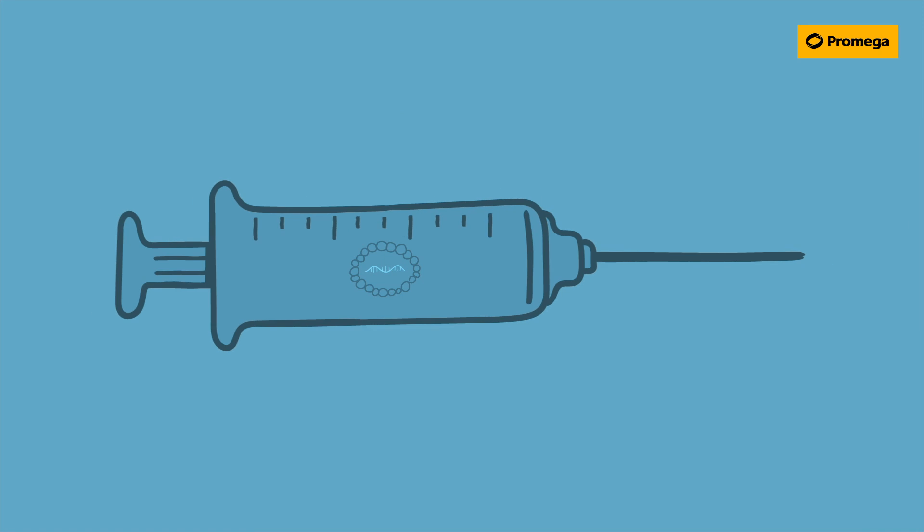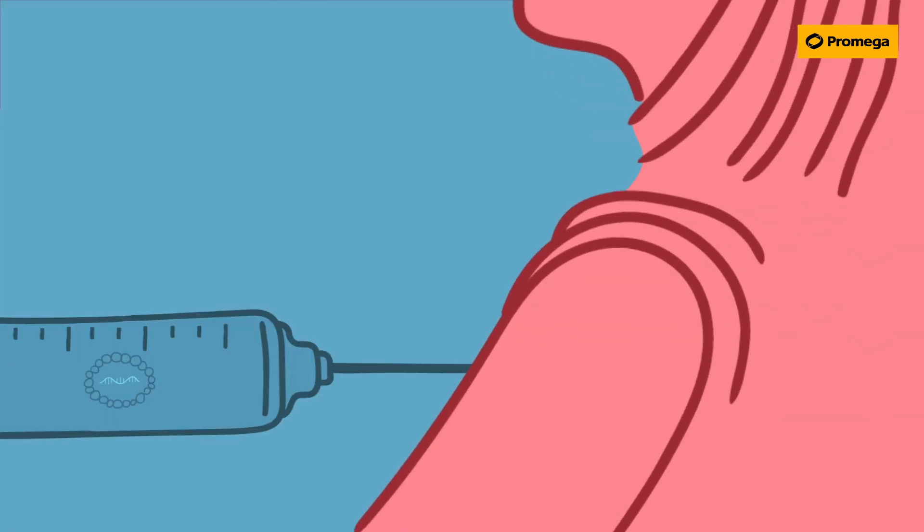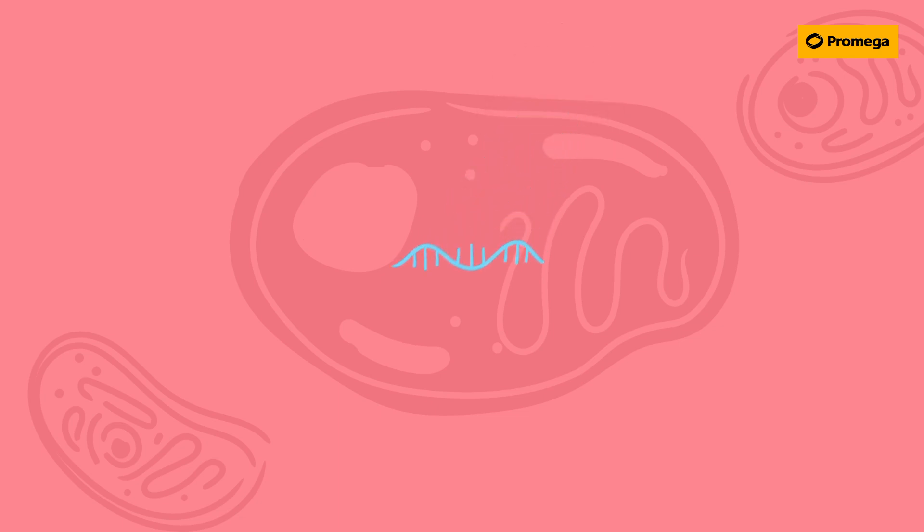The final vaccine formulation is injected into the skin or muscle. Once the mRNA enters the cell, it uses the cell's translation machinery to produce the viral spike protein.